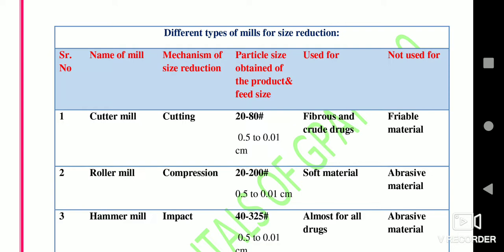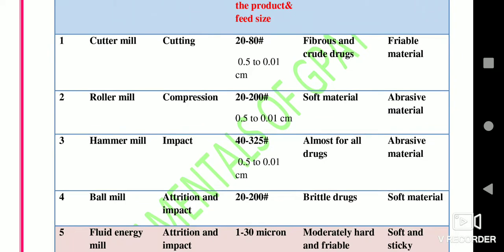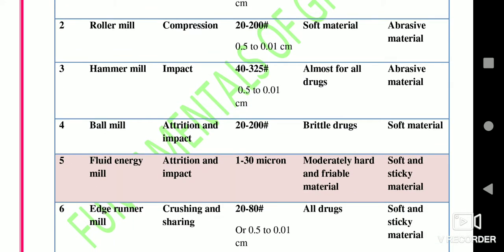Second is the roller mill — mechanism is compression or compaction; particle size obtained is 20 to 200 mesh; used for soft material; not used for abrasive material. Third is the impact hammer mill — principle is impact; particle size obtained is 40 to 325 mesh; used for almost all types of drugs; not used for abrasive material.